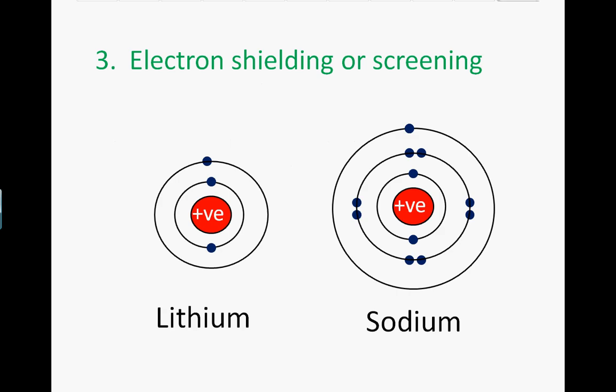If we compare lithium with sodium, the outermost electron in sodium has ten inner electrons shielding the nucleus, whereas with lithium there are only two. Therefore the shielding effect for the outer electron of sodium is greater than the outer electron of lithium.